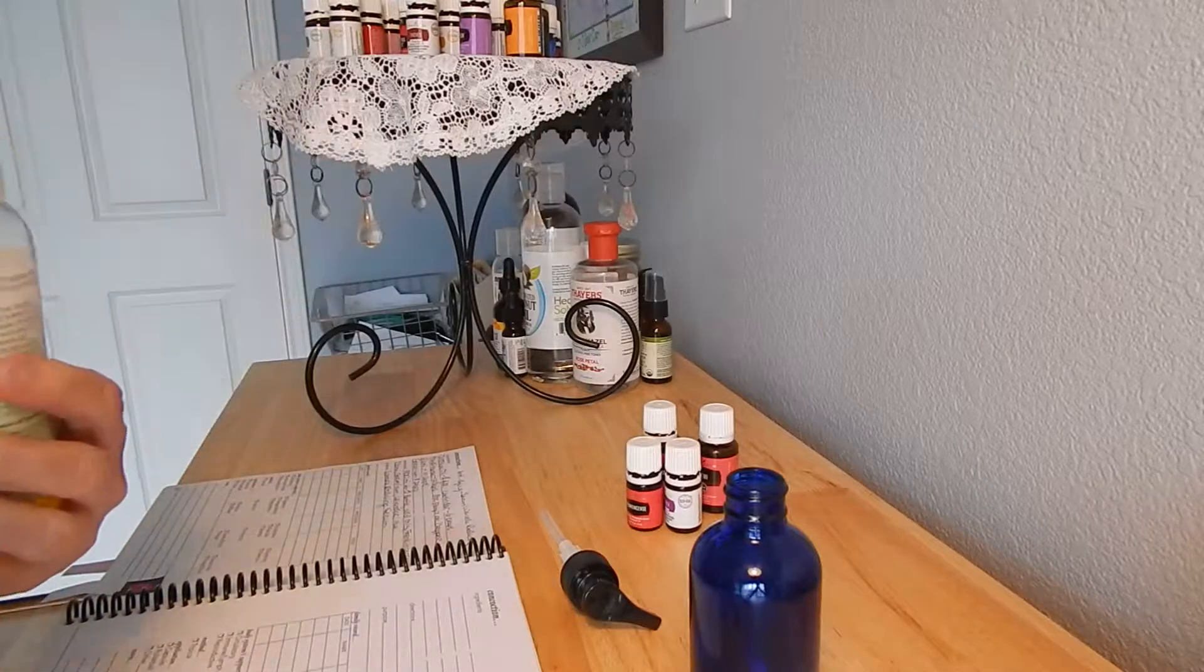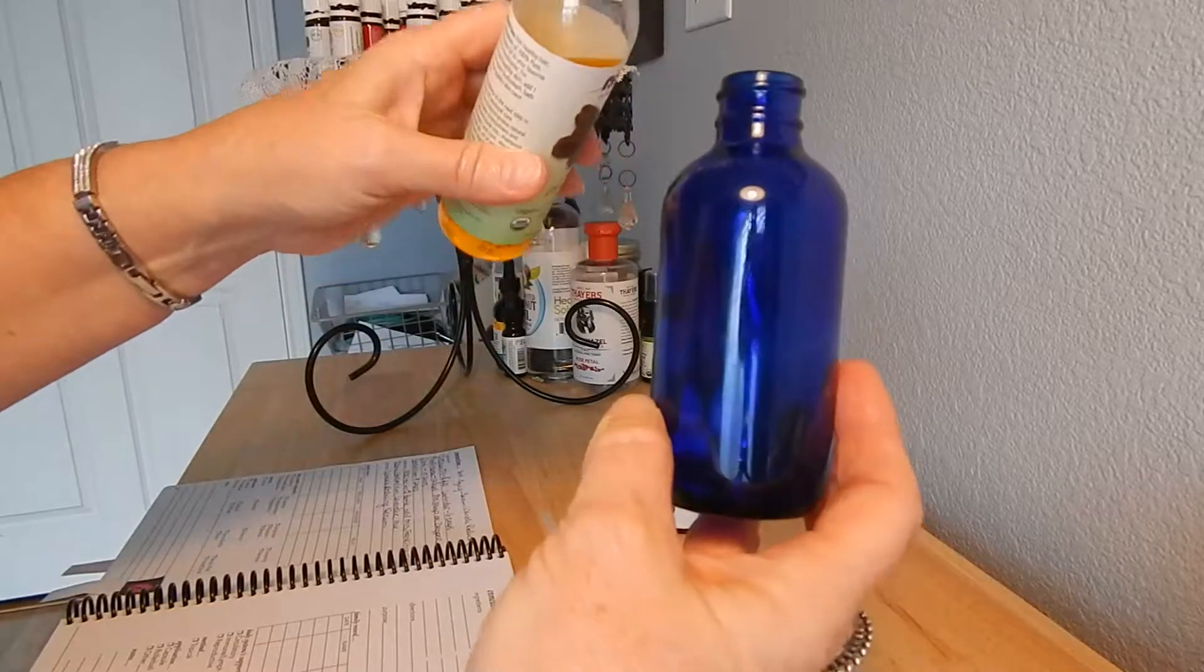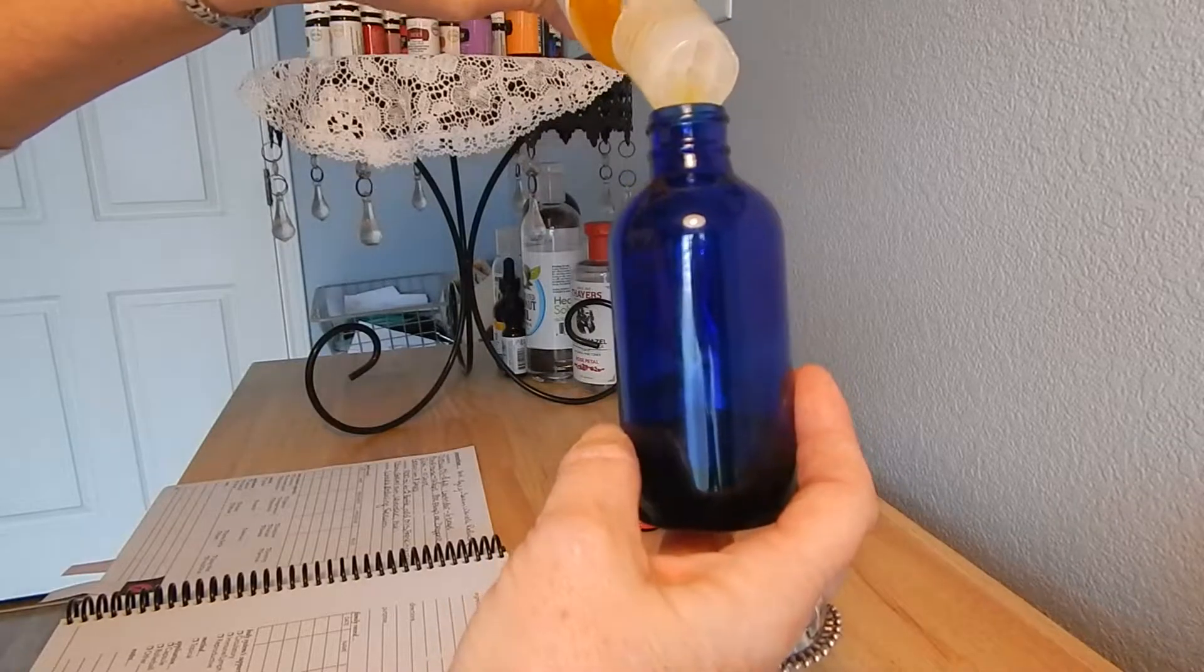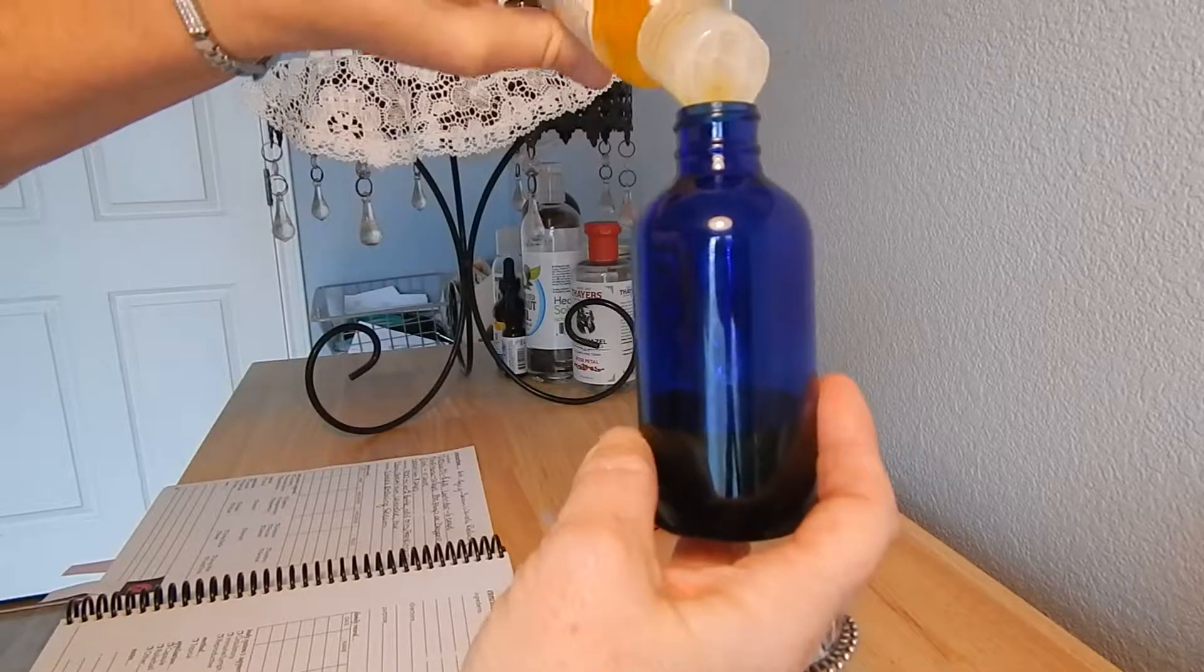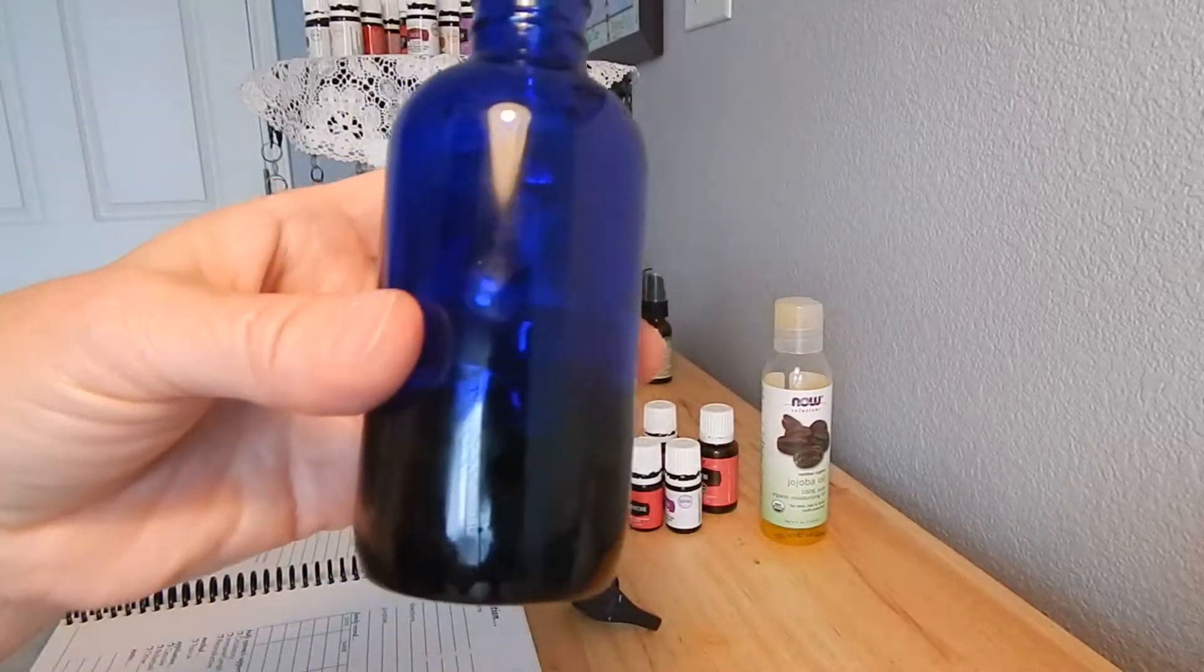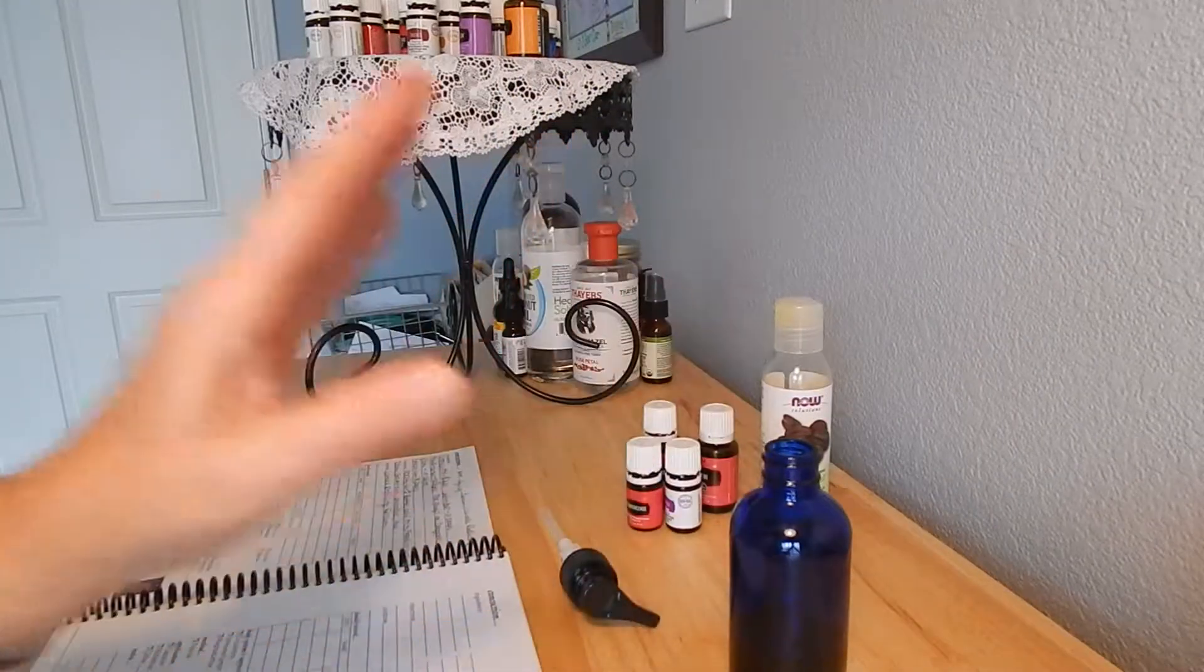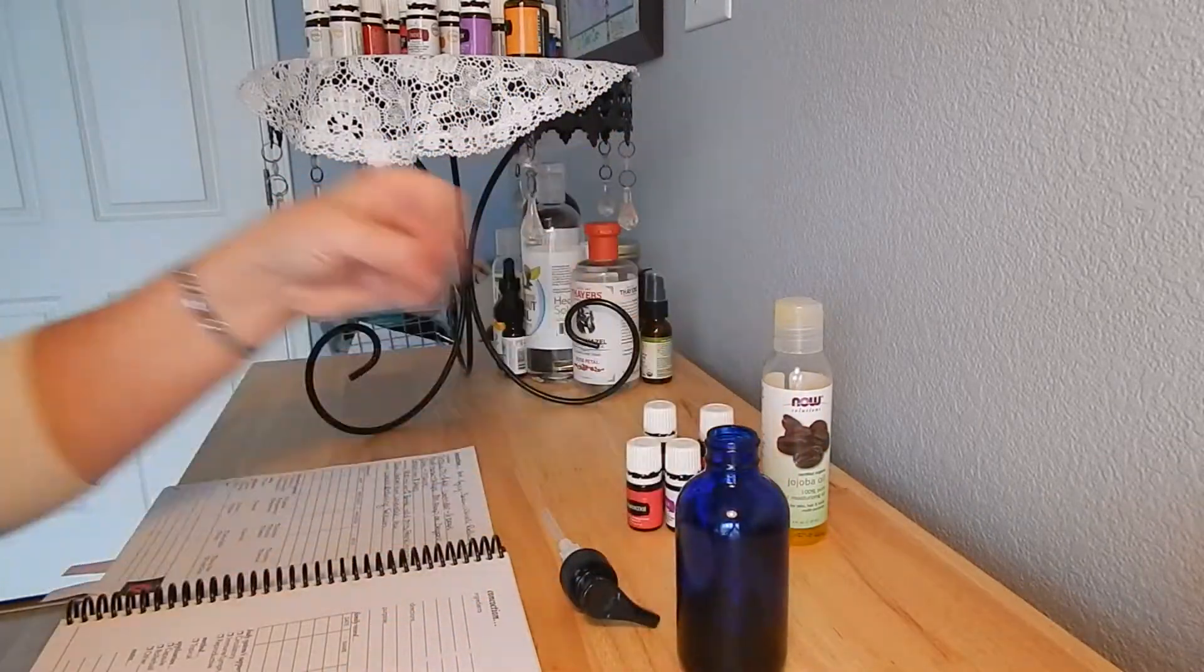So you're really going to want to fill a six ounce container probably almost half full. I'm not going to go quite half because that would be way too much for this one, so I'm probably going to do closer to a third. But in a six ounce bottle you would fill it three quarters or a good halfway full for sure.